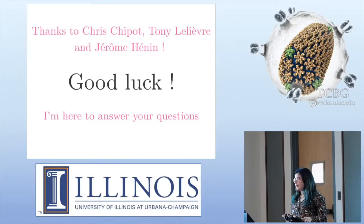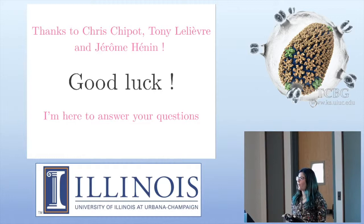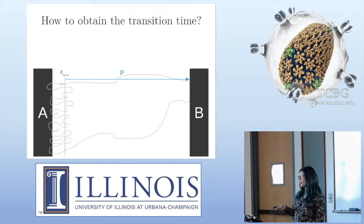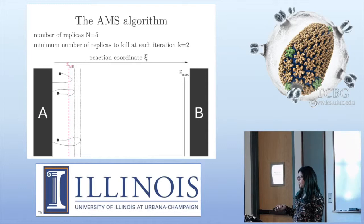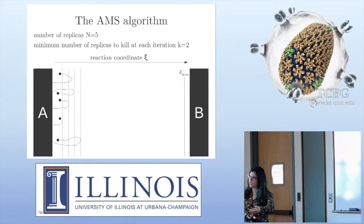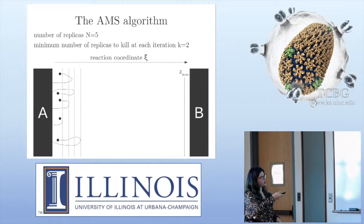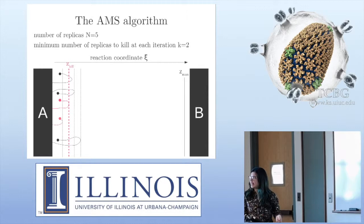Z_kill is determined on the fly because it's the K-th ordered level of the replica runs. Every time you run a trajectory, you set the levels of the trajectories, and Z_kill is always the K-th one. Another key difference: weighted ensemble has no rigorous mathematical proof that it works, whereas in AMS everything is mathematically proven, so you cannot inadvertently break the unbiasedness property.